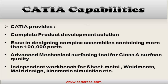Moreover, CATIA also provides advanced mechanical surfacing tools for modeling, analyzing, and visualizing ergonomics and aesthetic shapes for higher A-class surface quality. In addition to that, CATIA has independent workbenches for sheet metal, weldments, mold design, kinematic simulation and various other modules.